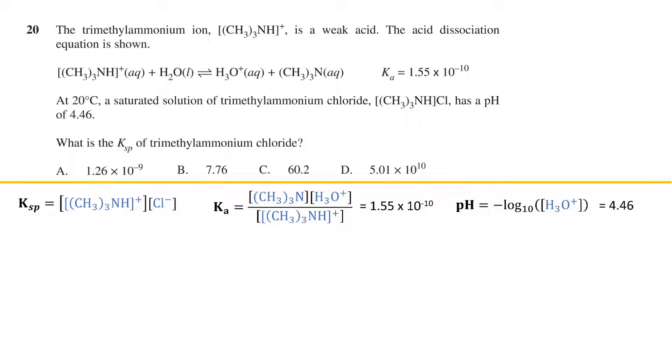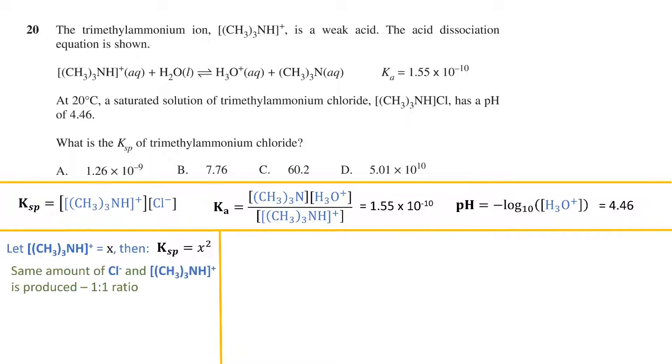So we need to rearrange the variables in these equations in order to get the value we are interested in. Let's assign the trimethylammonium ion concentration as X. This enables us to say that the Ksp value is just X squared. We can write this because when the solid dissolves, the same amount of chloride and trimethylammonium ions are produced. There is a 1 to 1 ratio.